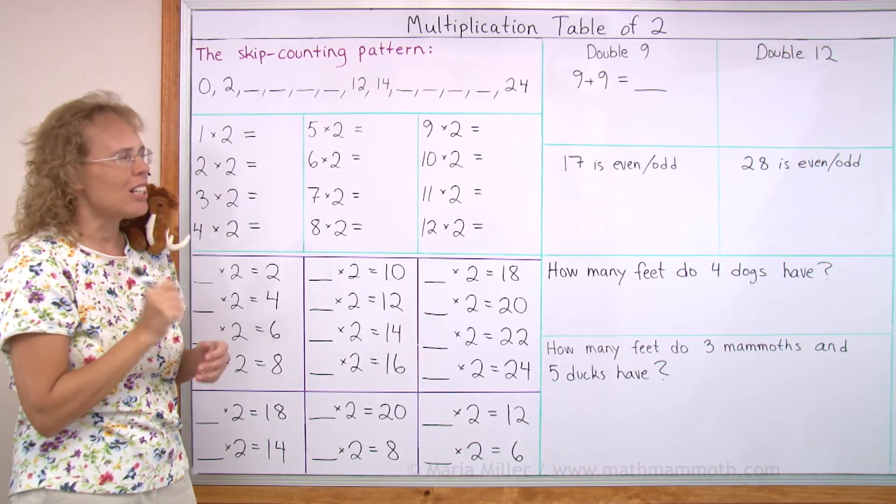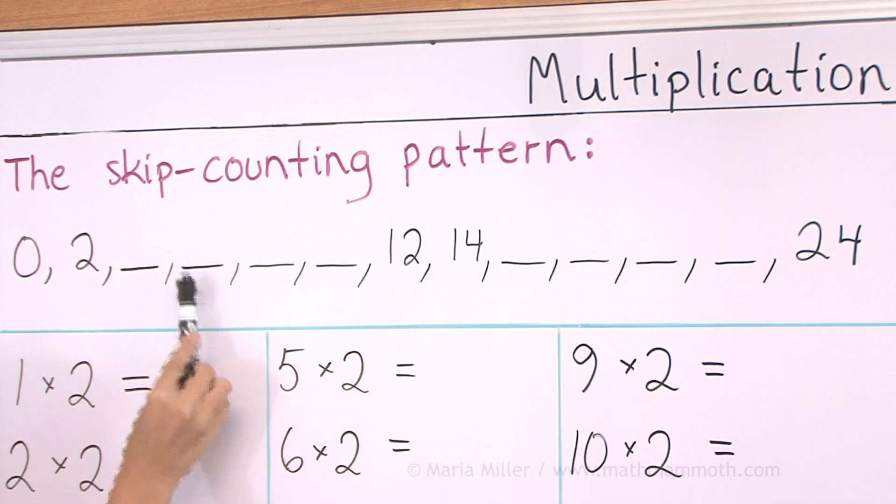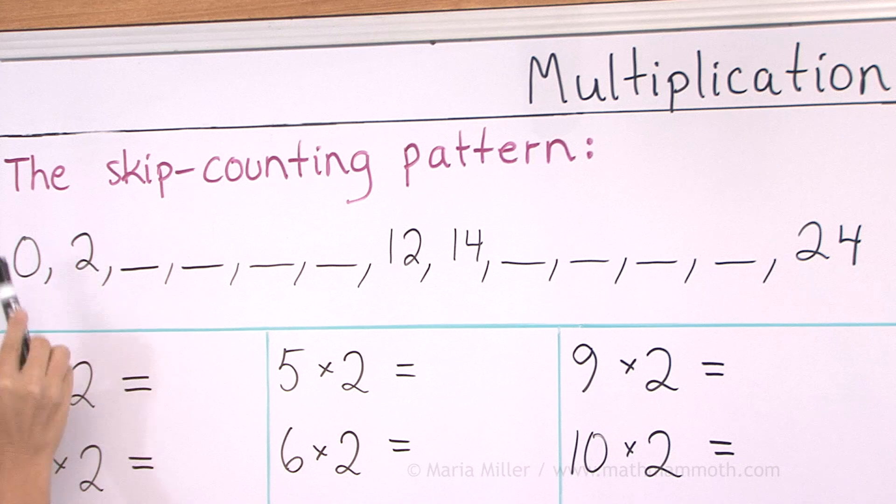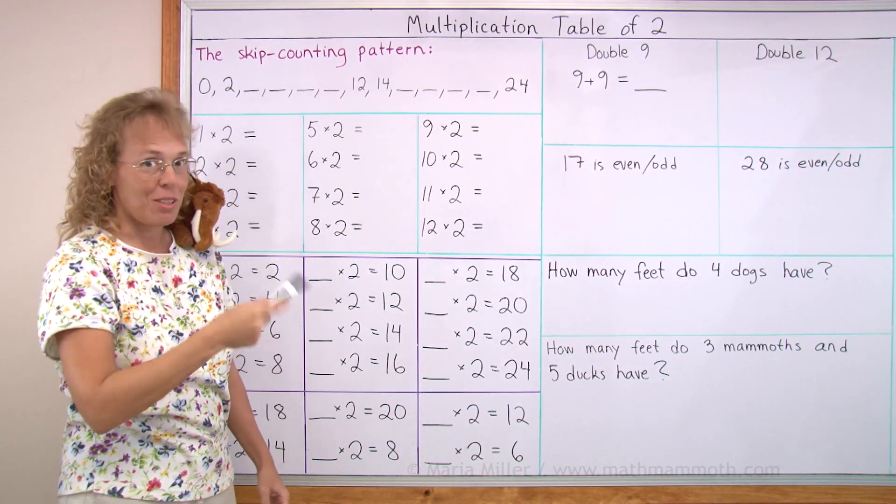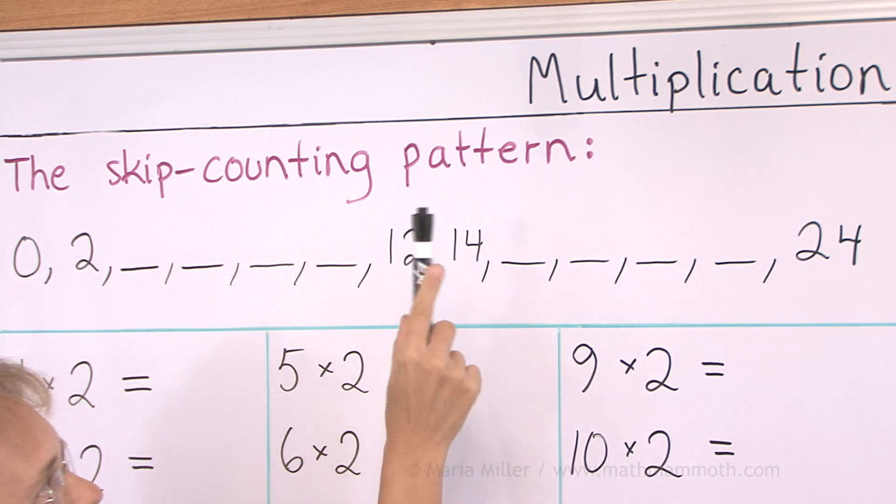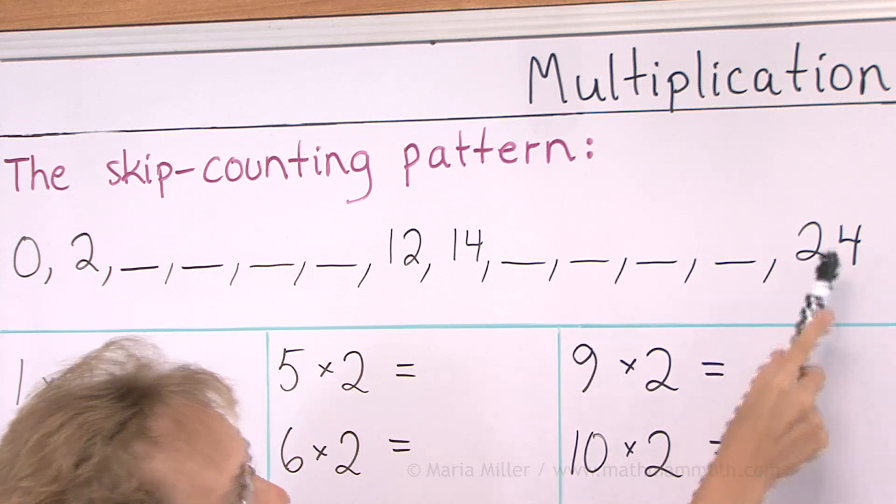That might be just a little bit more difficult. Let's try it one more time. 12, 2, and 0. And now we do the same from 14 till 24 and back. 14, 16, and 24. And then back.